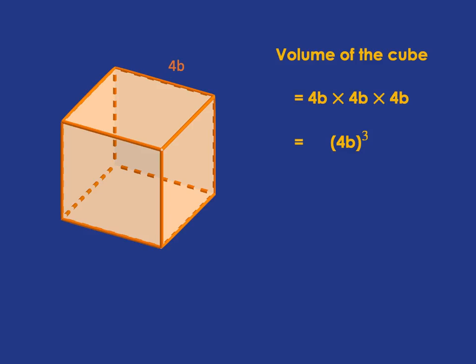And then the answer to that will be, well, 4 times 4 times 4 gives us 64, and b times b times b gives us b cubed, and so the volume of the cube is 64b cubed. And we could also see that as being 4 cubed is 64, and b cubed is b cubed.